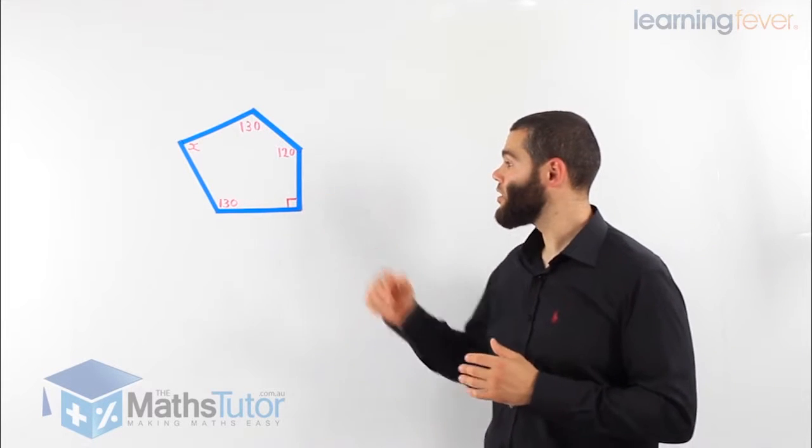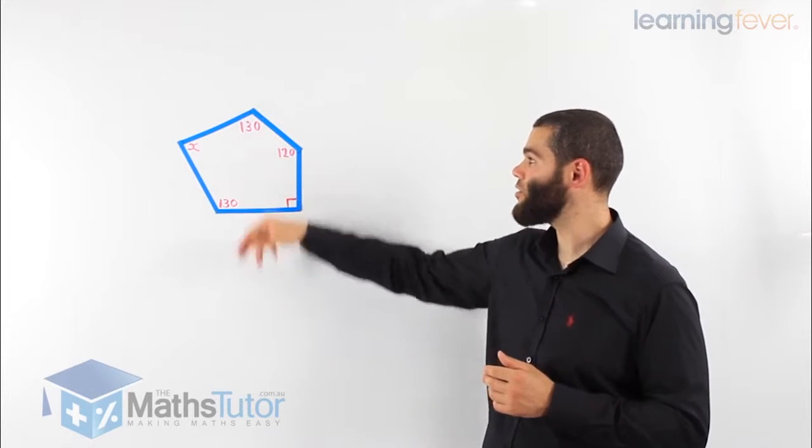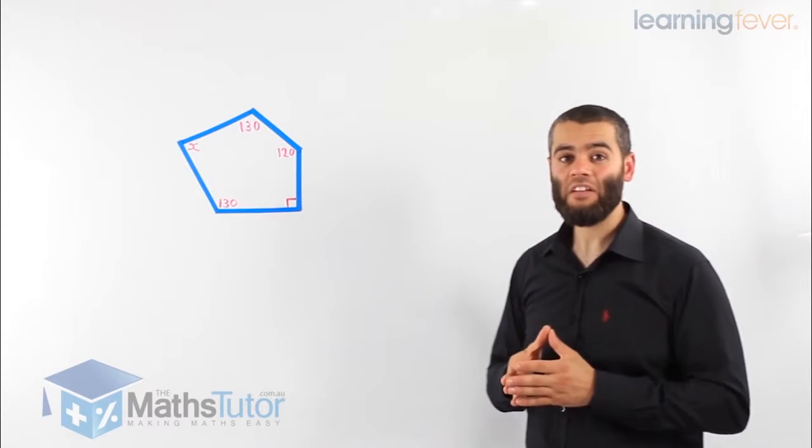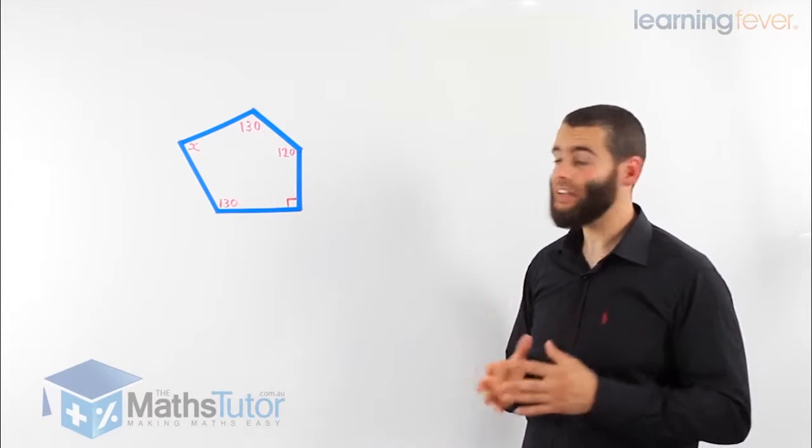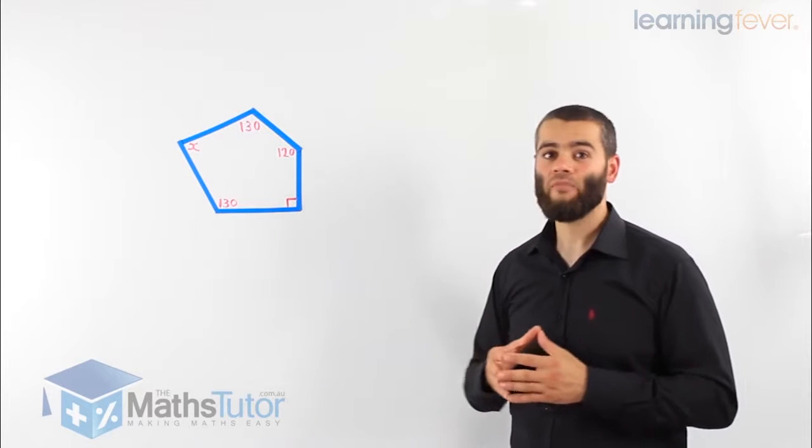we have an angle 90 degrees, 120, 130, an angle that is missing, we've put an x there, we don't know what it is, we would like to find it out, and another angle there that is 130.